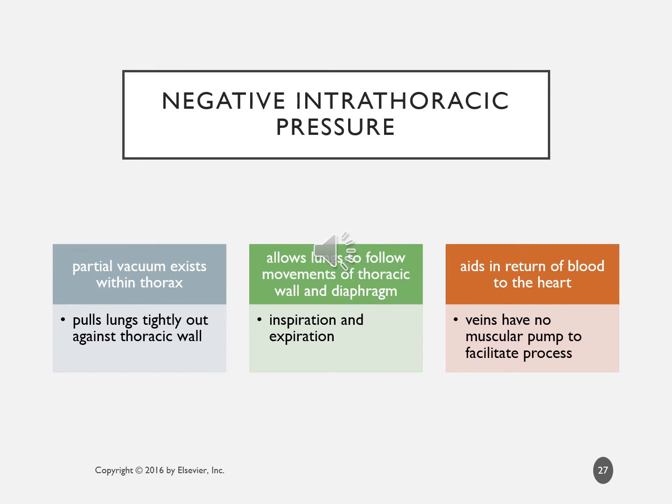Negative intrathoracic pressure is a partial vacuum that exists within the thorax — there is no air surrounding the outside of the lungs. This vacuum pulls the lungs tightly against the thoracic wall and allows lungs to follow movements of the thoracic wall and diaphragm during inspiration and expiration. It also aids the return of blood to the heart, since veins have no muscular pump.